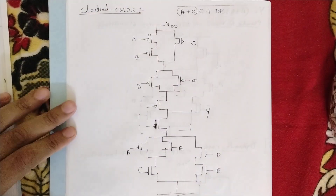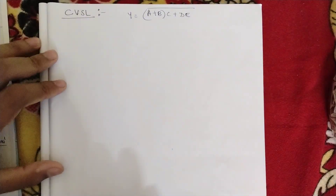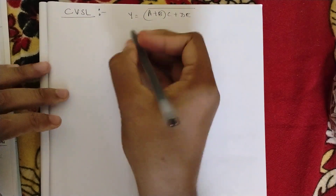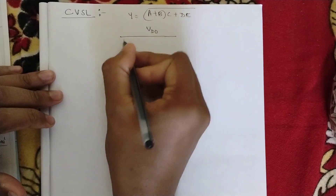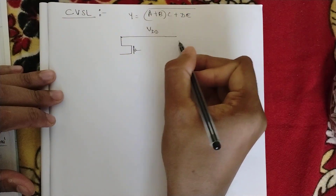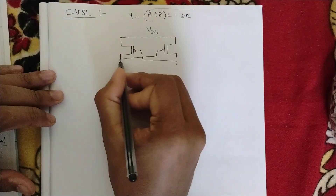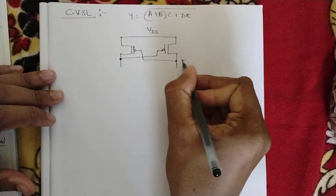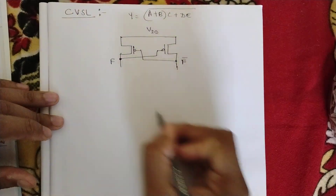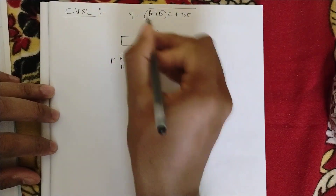This was about clocked CMOS. We have one more important circuit that is CVSL — Cascaded Voltage Shift Logic. For CVSL you should be using two cross-coupled PMOS transistors. First this is VDD, and from here you should be using two cross-coupled PMOS transistors — one connected here and one connected here. One output is f-bar or y-bar and one is f. Here we should be drawing the NMOS transistor logic for both sets.